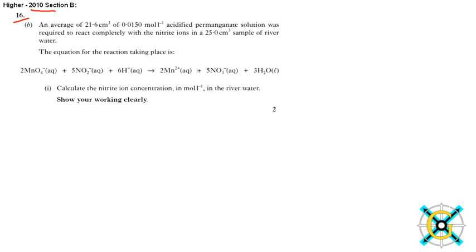The question says, an average of 21.6 centimeters cubed of 0.0150 mol per liter acidified potassium permanganate solution was required to react completely with nitrate ions in a 25.0 centimeters cubed sample of river water.